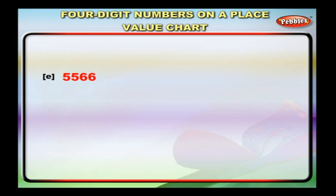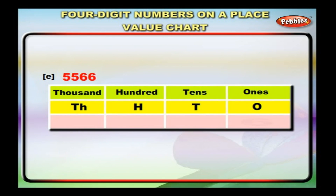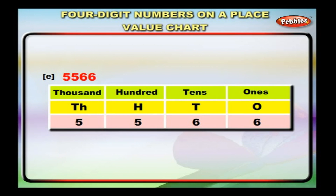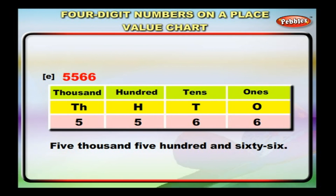Next is five thousand, five hundred and sixty-six. Bring six to the ones column, six to the tens column, five to the hundreds column, and five to the thousands column. Now, we have five thousands, five hundreds, six tens and six ones. We write this as five thousand, five hundred and sixty-six.